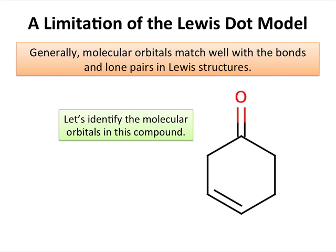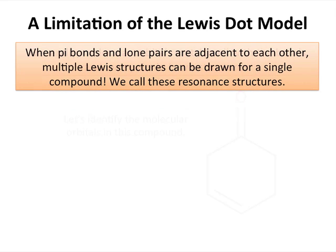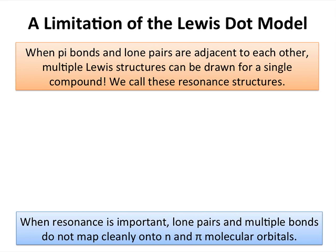However, in some cases it's not possible to map bonds and lone pairs from Lewis structures directly onto molecular orbitals. In these cases, resonance becomes important. When resonance is important, lone pairs and pi-bonds in Lewis structures will not map cleanly onto the n, pi, and pi-star orbitals that we've seen before.